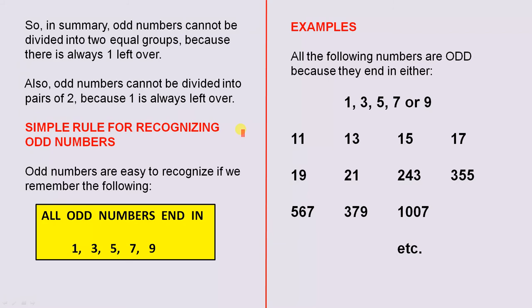Now, having said all that, here is a simple rule for recognizing odd numbers. Odd numbers are easy to recognize if we remember the following: all odd numbers end in one, three, five, seven, or nine. If a number ends in any one of these digits, it is odd. What a great rule.